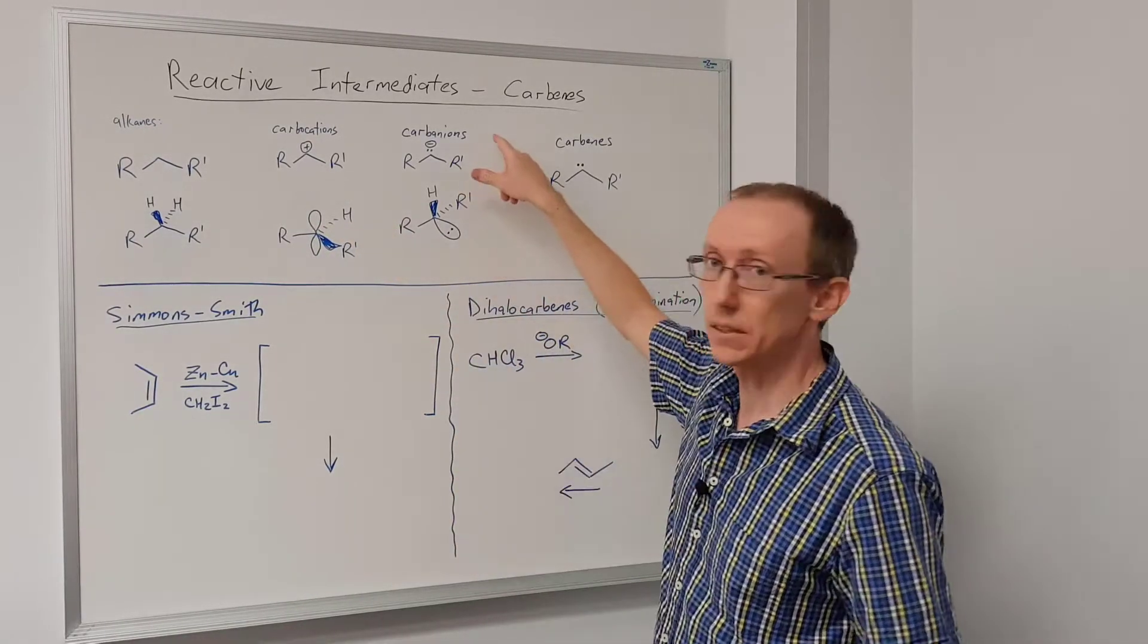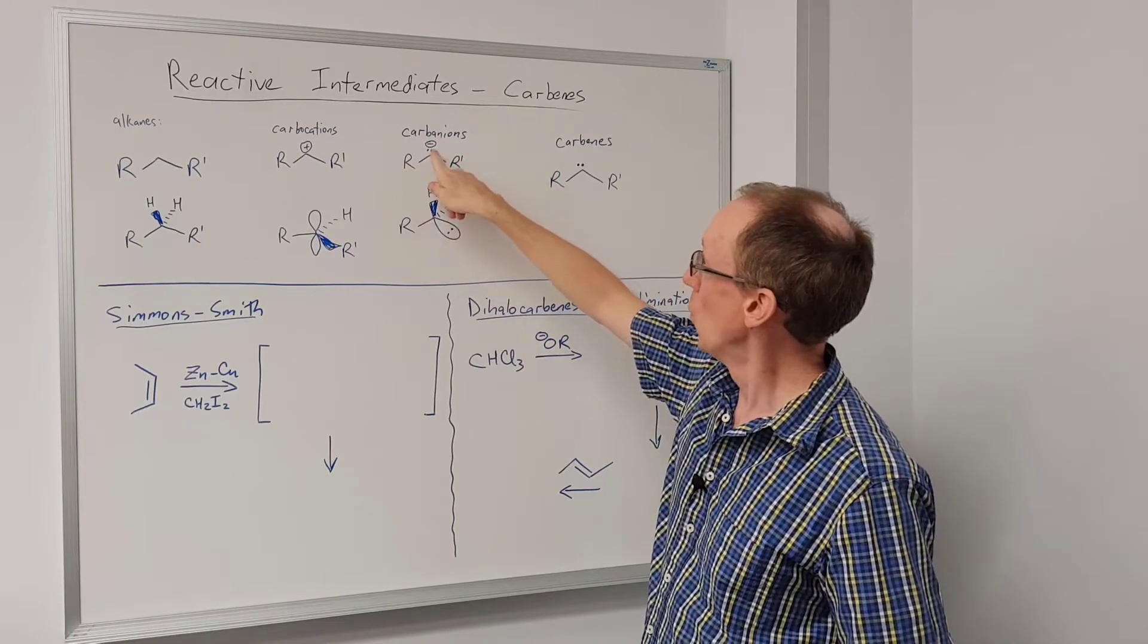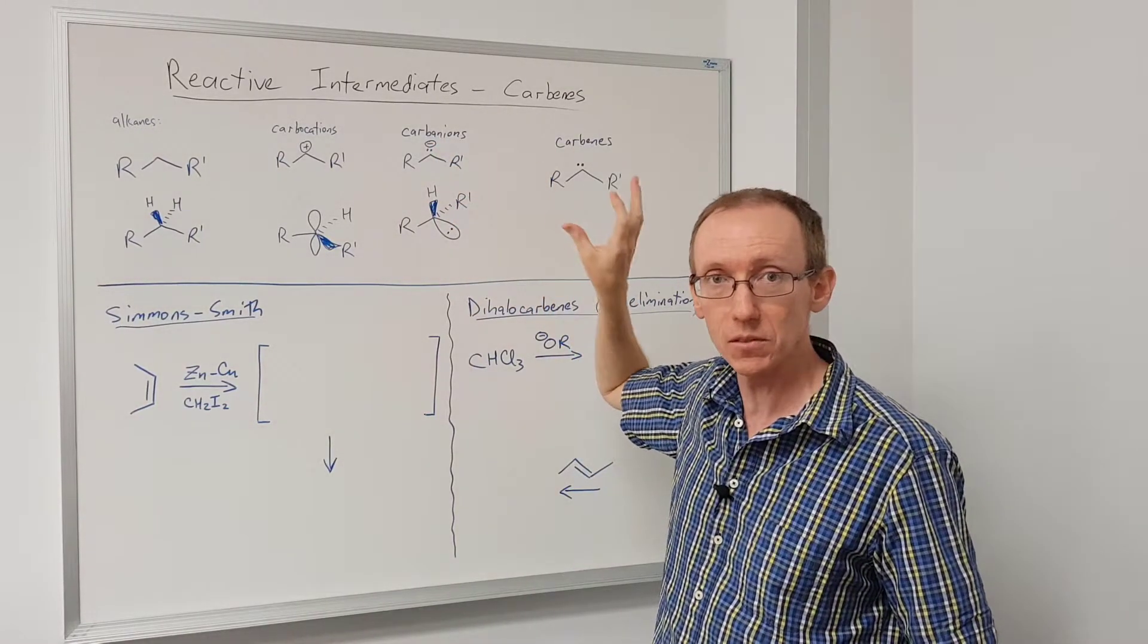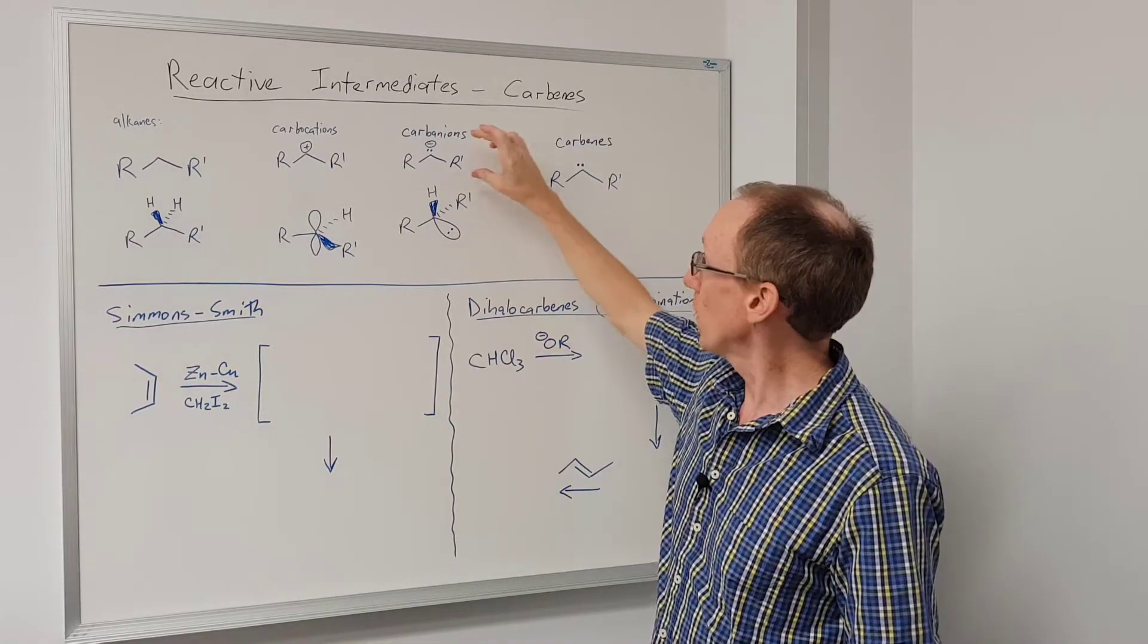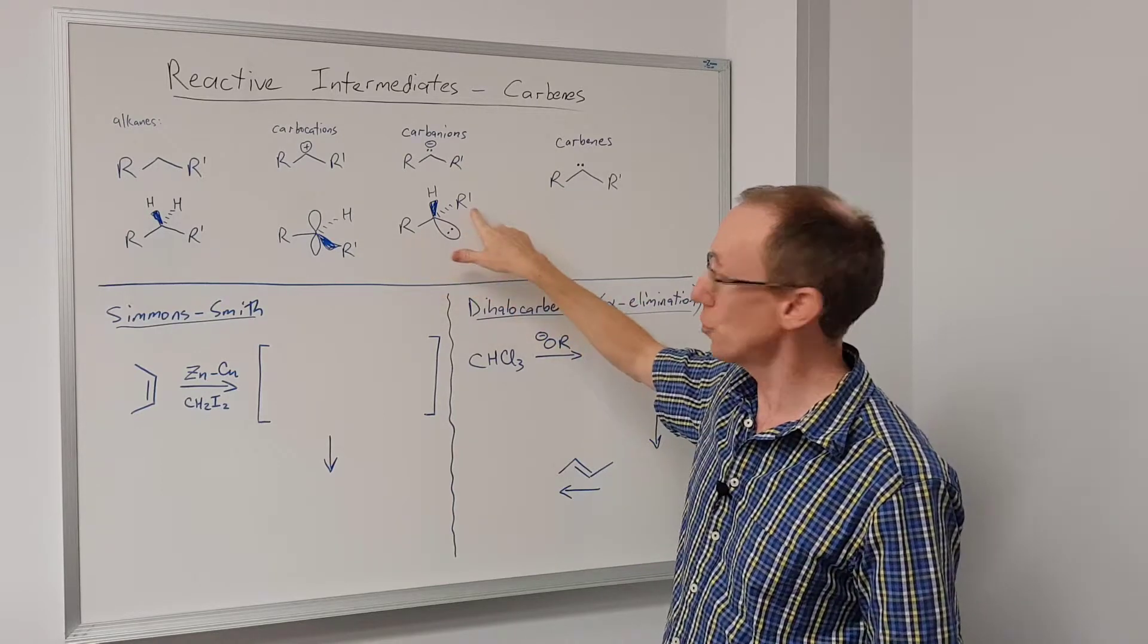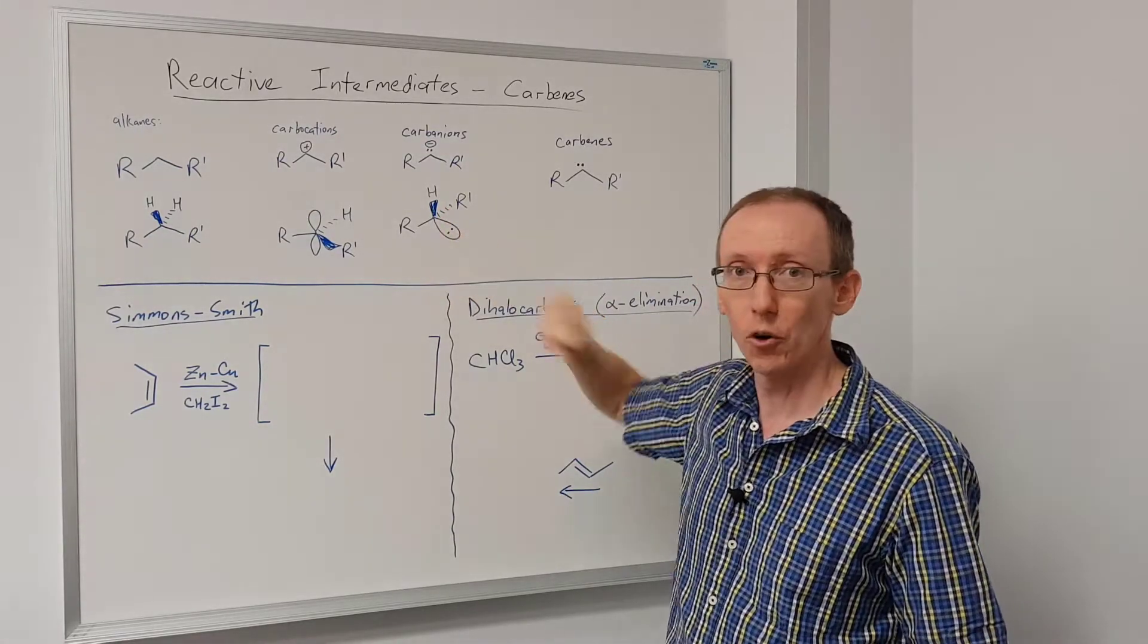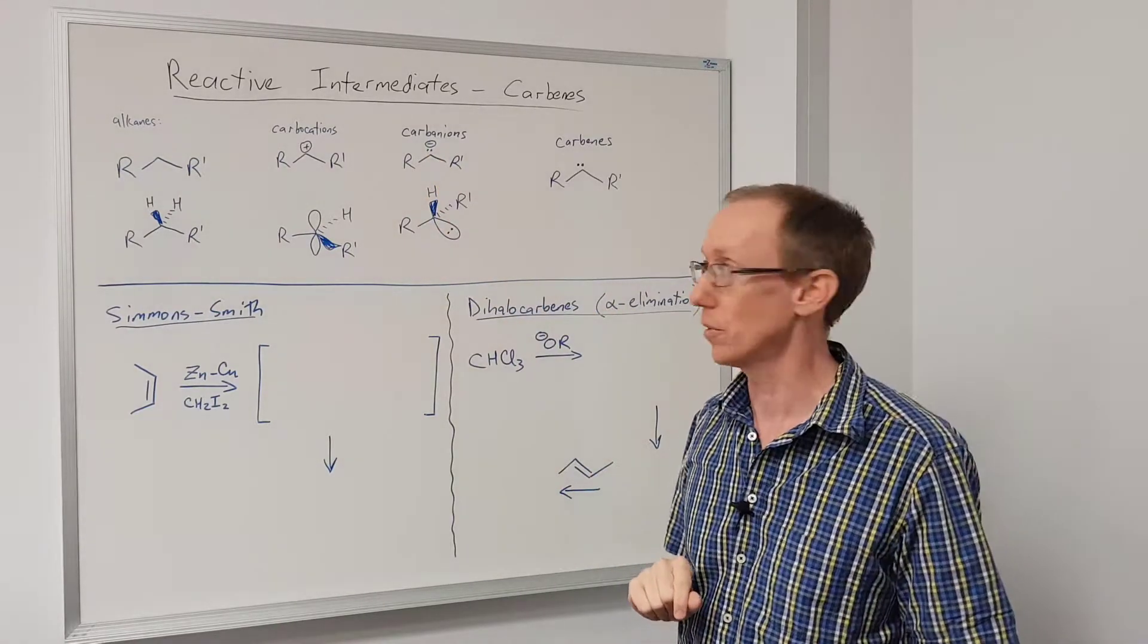So that brings us to carbanion. A carbanion we would normally draw like this with a lone pair of electrons and a negative charge. We can sometimes take a shortcut and not draw in the lone pair of electrons, just remember they're there and just draw the negative charge. But what does that represent? It represents a structure where we have two R groups attached to a carbon with a lone pair of electrons - that's what gives it the formal negative charge - and then this hydrogen which is implicit in this structure above.